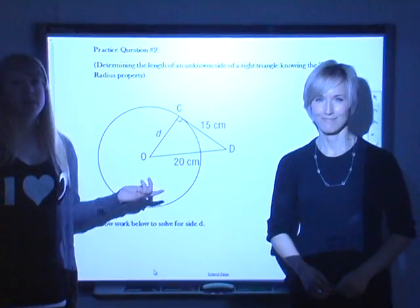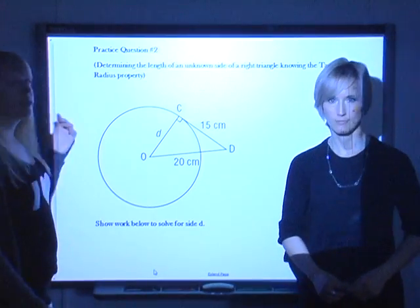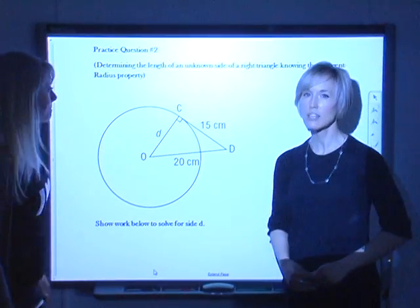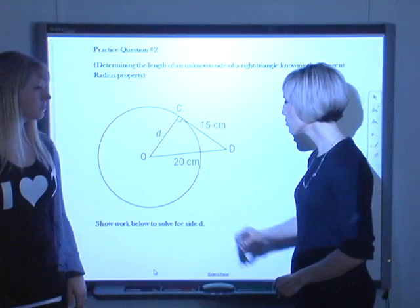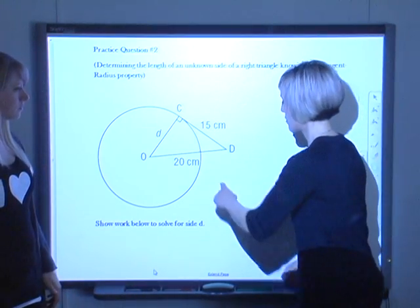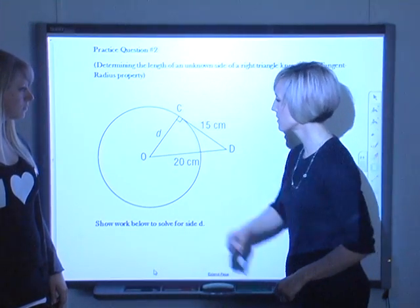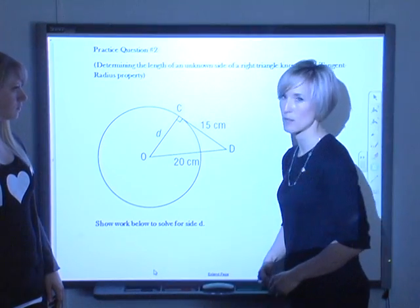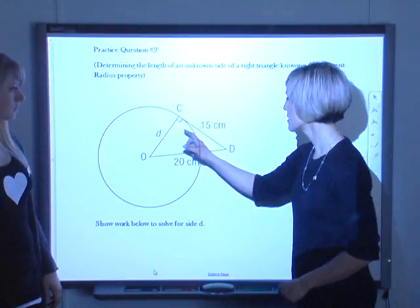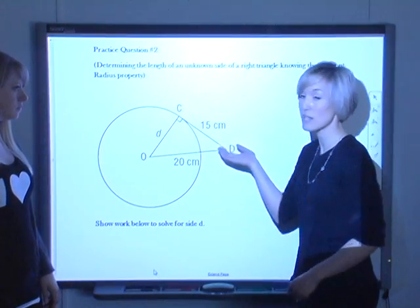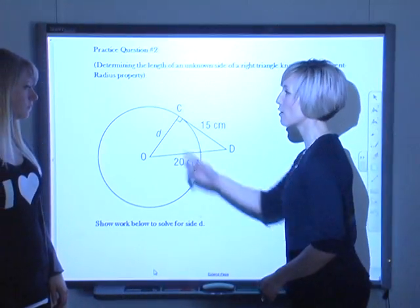Alright. So, let's move on to practice question two and do something a little different. Let's determine the length of an unknown side of a right triangle knowing the tangent radius property. Okay. So, let's look at the information given here. So, we're given, we're told that this is a right triangle, and we have two of the legs of the triangle labeled. So, we have one side length of 20 centimeters, another side length of 15 centimeters, and it's asking us to solve the length of line segment CO, which they've labeled D. They've also told us that from the center out, we know that this is the radius, and it's forming a 90 degree angle with line segment DC. Therefore, we can say that DC is tangent to the radius, and now we've got a right triangle.